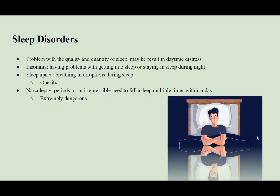Sleep disorders involve problems with the quality and quantity of sleep. The first one is insomnia, which involves problems with getting into sleep or staying asleep during the night. Sleep apnea involves breathing interruptions during sleep, for example by obstruction of the airway that causes snoring, gasping, and breathing pauses. The major risk factor of sleep apnea is obesity. Another interesting sleep disorder is narcolepsy, affecting 1 in every 2,000 adults, which happens when people experience periods of an irresistible need to fall asleep multiple times within a day. This disorder is extremely dangerous — imagine driving on a highway and suddenly feeling unable to resist sleep, potentially resulting in severe car crashes or even death.